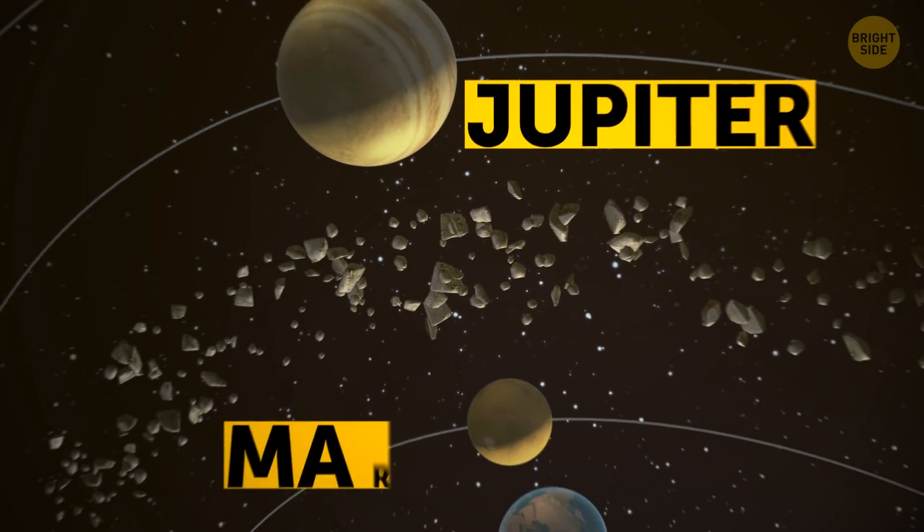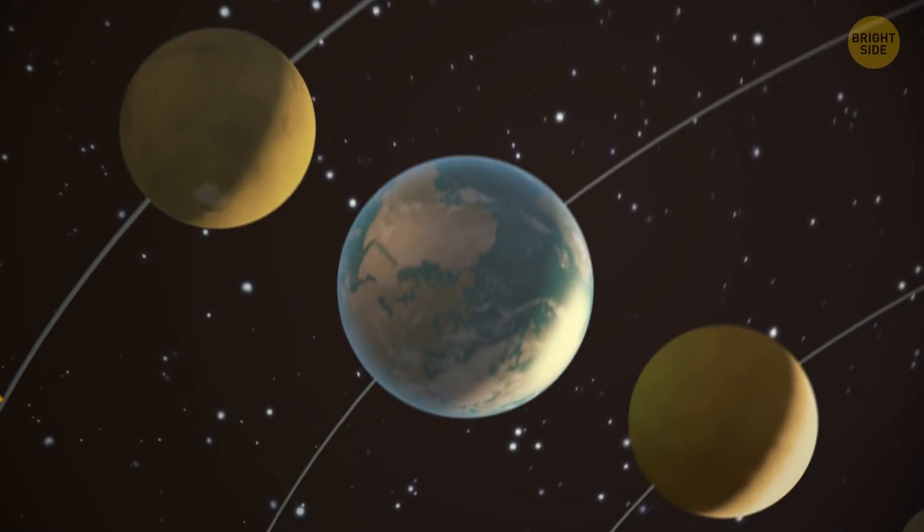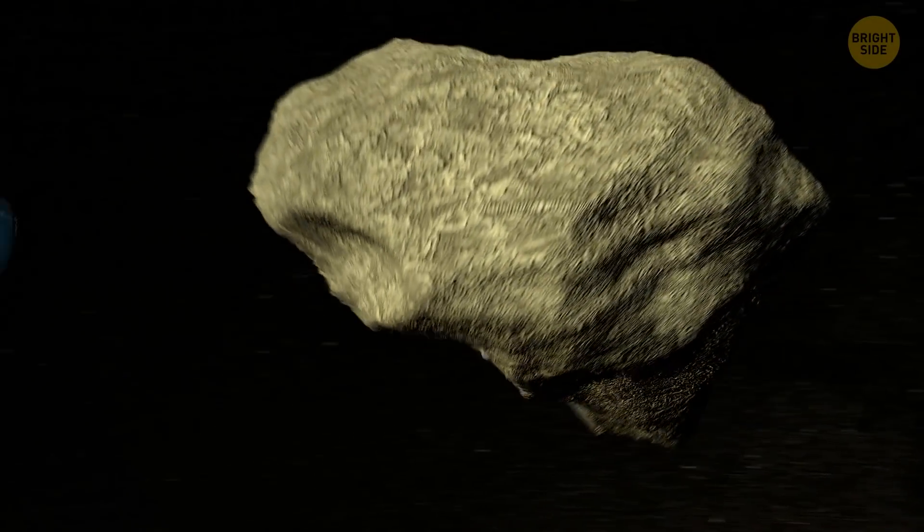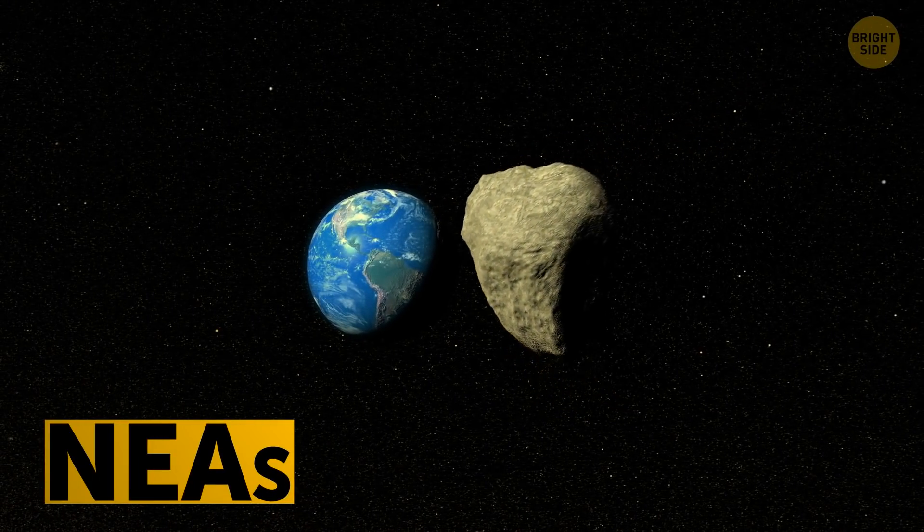Most of them end up somewhere in between the orbits of Jupiter and Mars, and simply pass us by at a safe distance. But not Eros. It became the first of Near-Earth Asteroids, or NEAs.